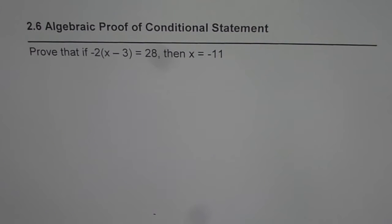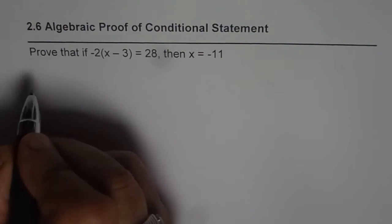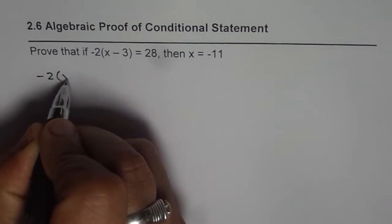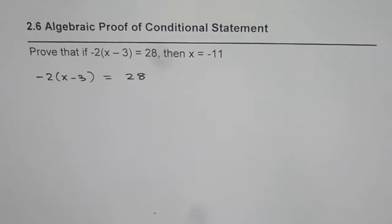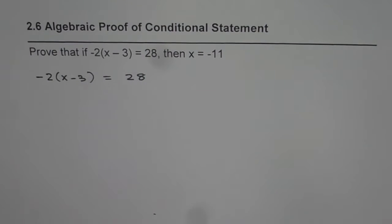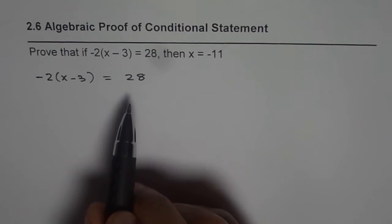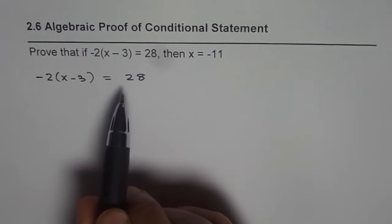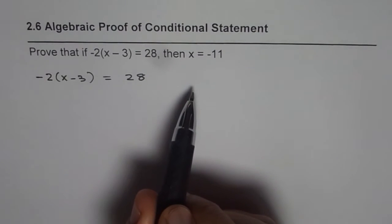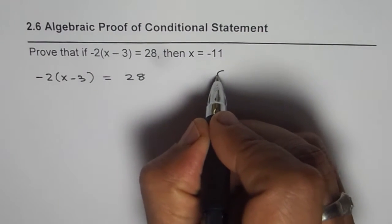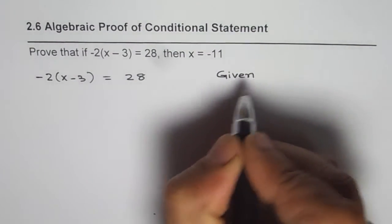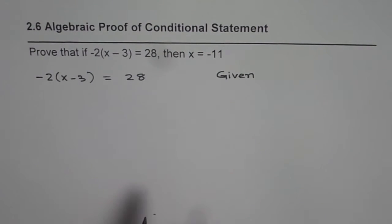Let's begin with what is given to us: -2(x - 3) = 28. We will follow a series of statements which will prove that the solution is this. For every statement, we have to give a reason. This is our first statement, and this statement is given to us, so the reason is 'given'. Whenever you are trying to prove, you should start with what is given to you and then move forward.